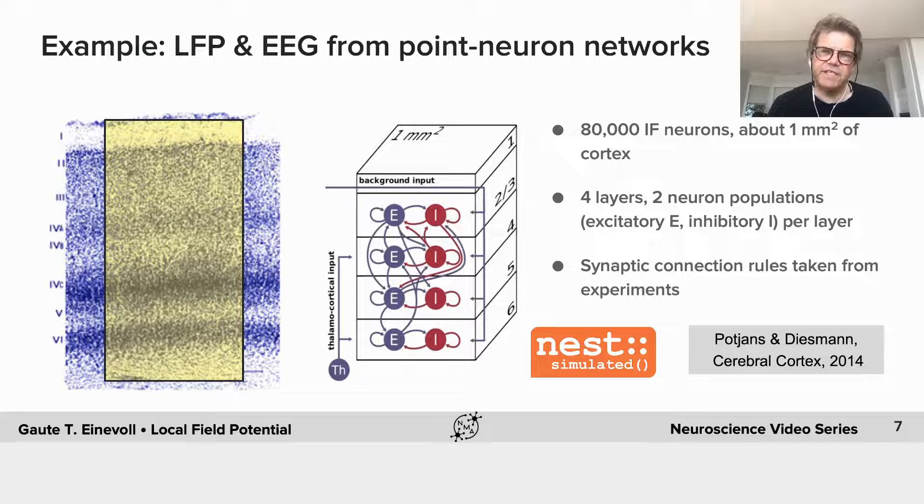And they are divided into four layers, two neural populations in each, one excitatory, one inhibitory. And in that case, the synaptic connection rules were taken from experiments.